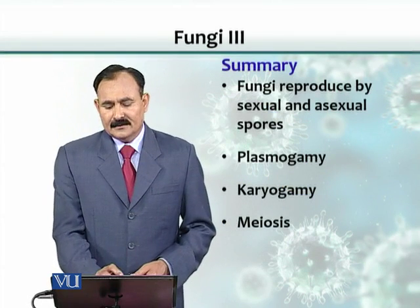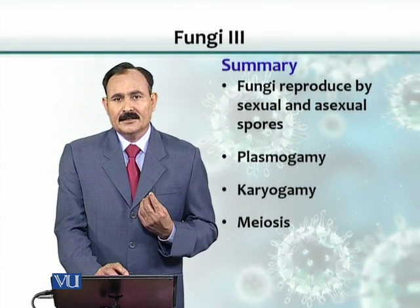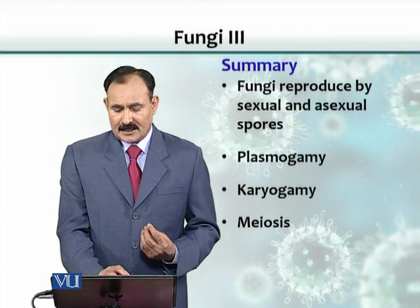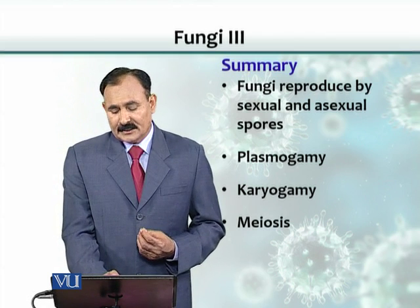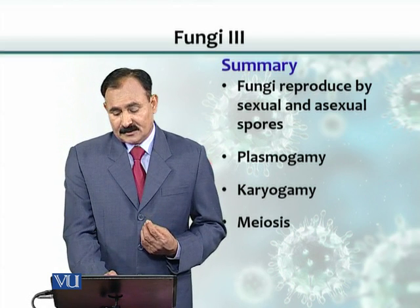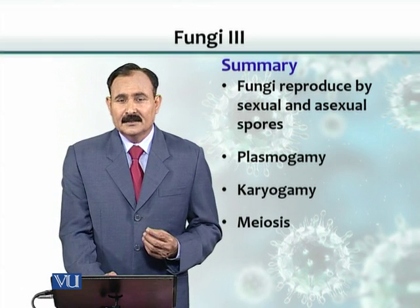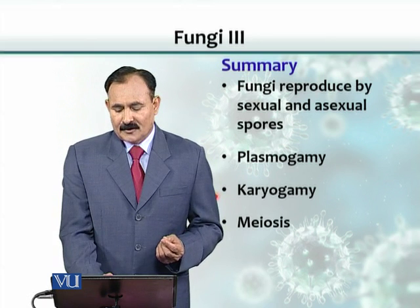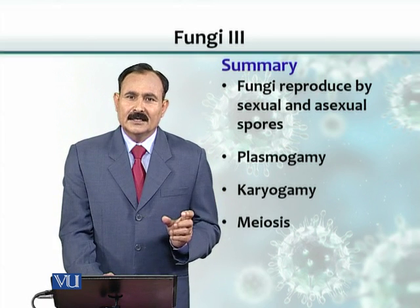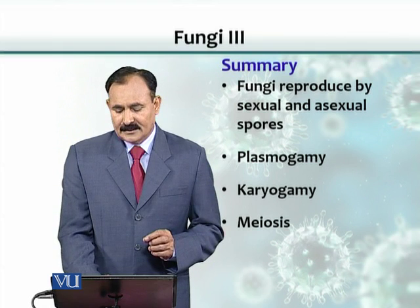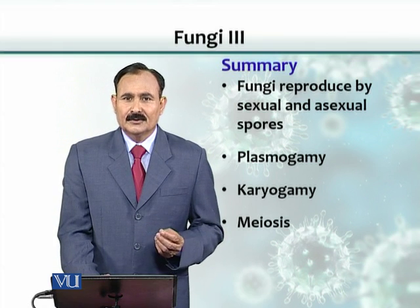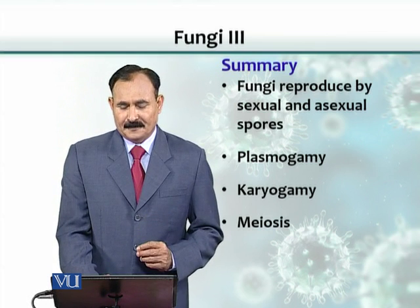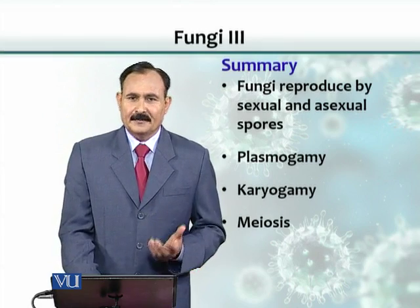In summary, fungi can reproduce by sexual as well as asexual mechanisms. Sexual spores are produced in three stages. The first is plasmagamy, where the nucleus of one cell penetrates the cytoplasm. This is followed by karyogamy, where the two nuclei unite and combine together. And then to restore the same haploid number, the cell must undergo meiotic division, which creates haploid number again.